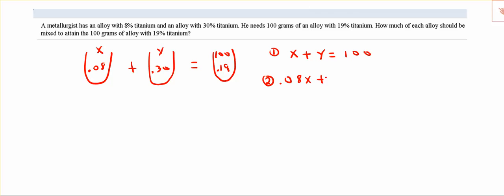Equation two will be based on the mixture itself. So we have 8% titanium for the X container, 30% titanium for the Y container, and then 19% titanium of the final container which has 100 grams. So 19% of the 100 grams.